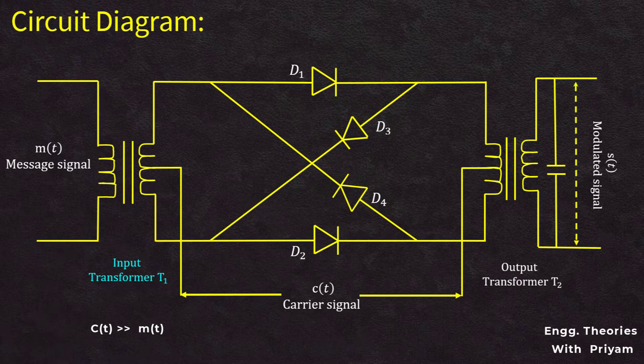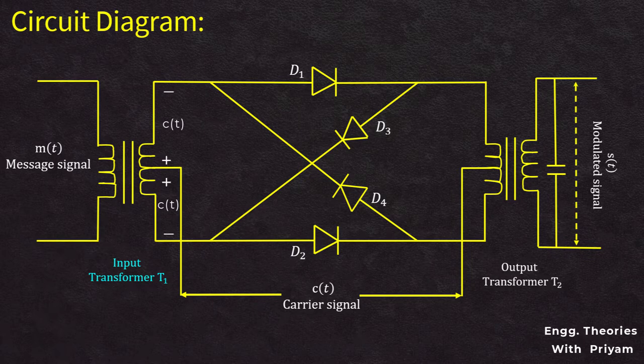When the carrier signal is in the positive half cycle, diodes D1 and D2 will be in on condition and diodes D3 and D4 will be in off condition. When the carrier signal is in the negative half cycle, diodes D1 and D2 will be in off condition and diodes D3 and D4 will be in on condition.